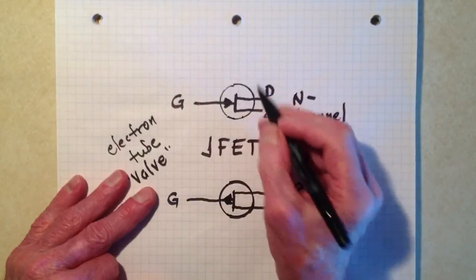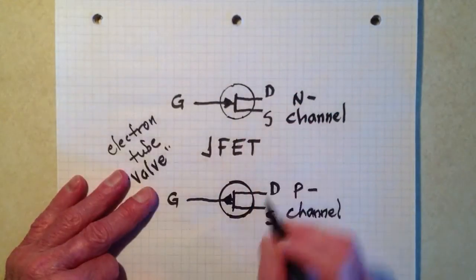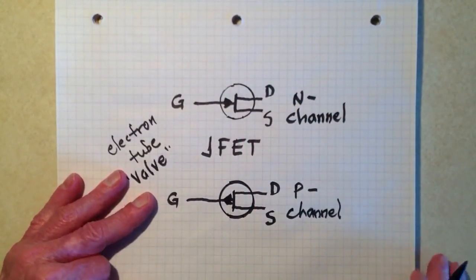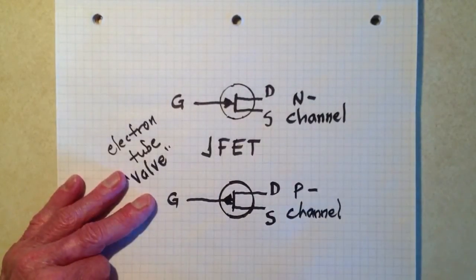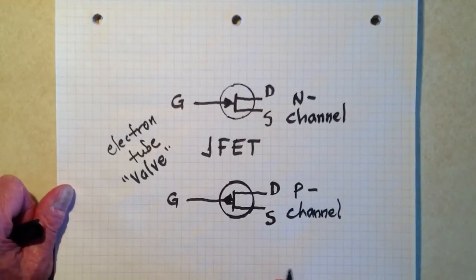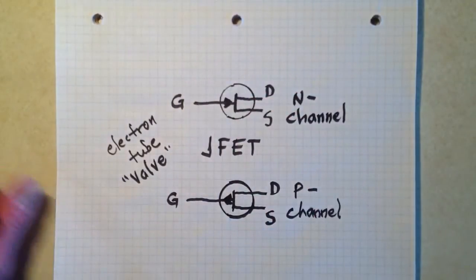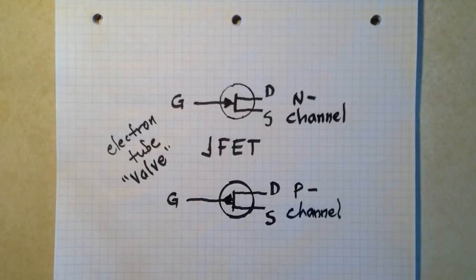Once again, you will occasionally see these symbols without those circles. So beware, and even once in a while, someone will have the nerve not to put these arrows in here. So you can't tell just by looking at the symbol whether or not it's an N-channel or a P-channel.